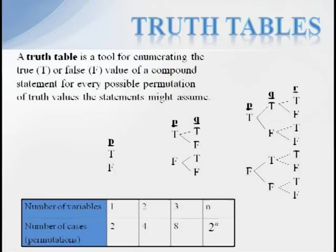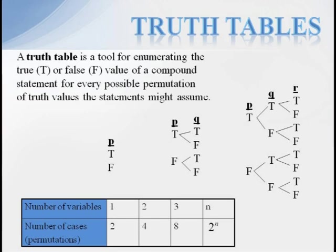A common tool for analyzing compound statements is a truth table. A truth table is a table which lists the truth value of the compound statement for every possible permutation or rearrangement of truth values of the variable or statements that were used to create it. In order to list every arrangement, you need to remember that every variable can be either true or false. We can find all the cases by making a tree.